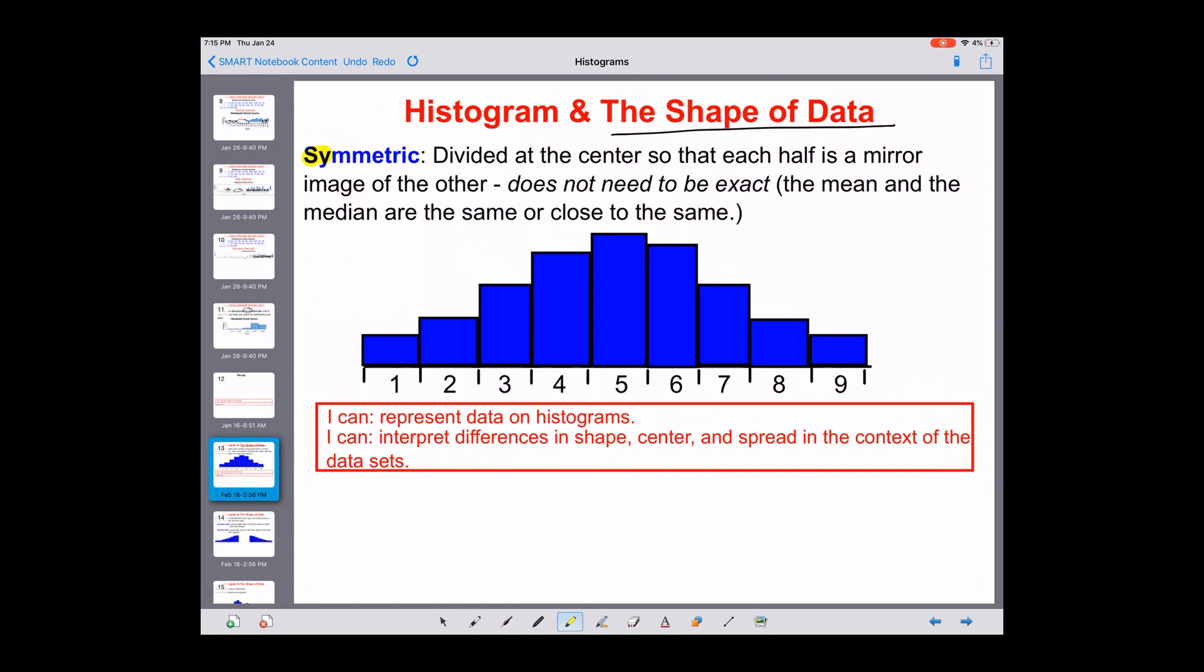Our definition is going to be symmetric. A symmetric histogram or symmetric data basically means if you were to cut a graph in half like this, it is a mirror image on both sides. Divide it at the center so that each half is a mirror image of the other. It doesn't need to be exact, as you can tell this part right here is a little bit higher than this part over here.